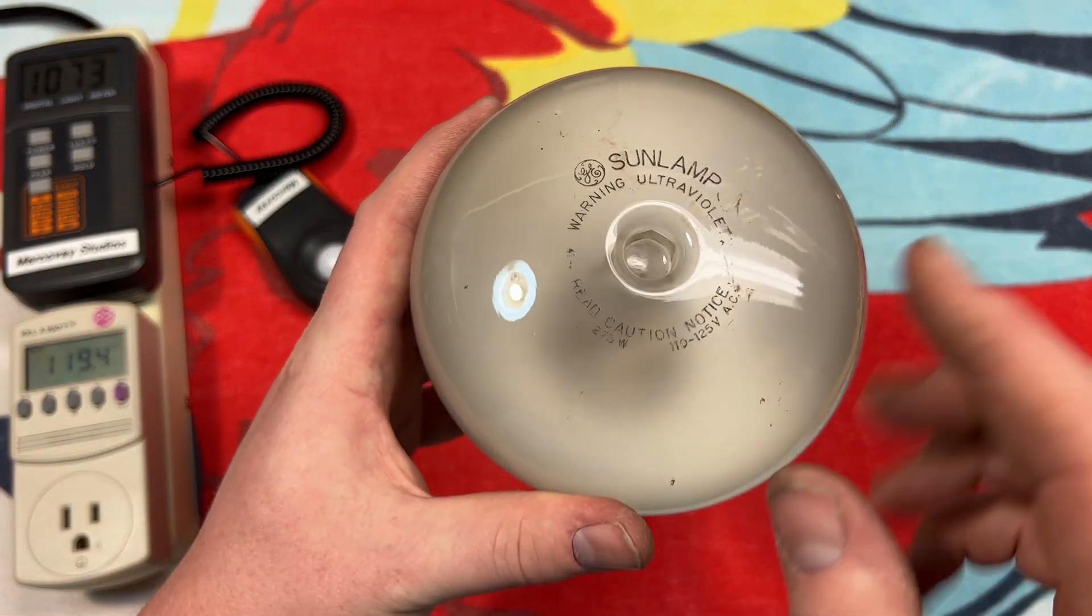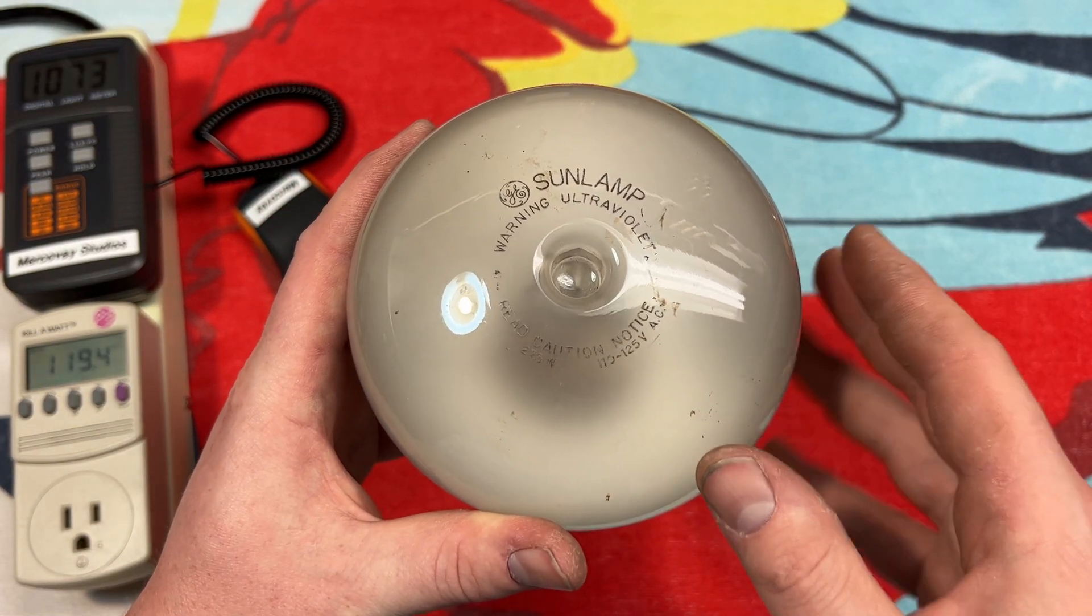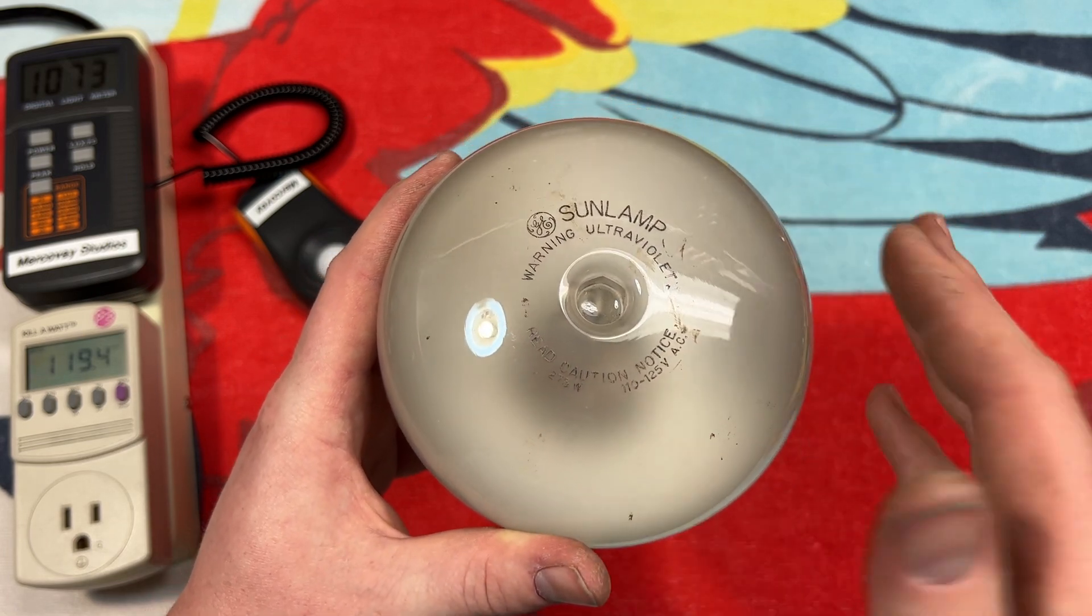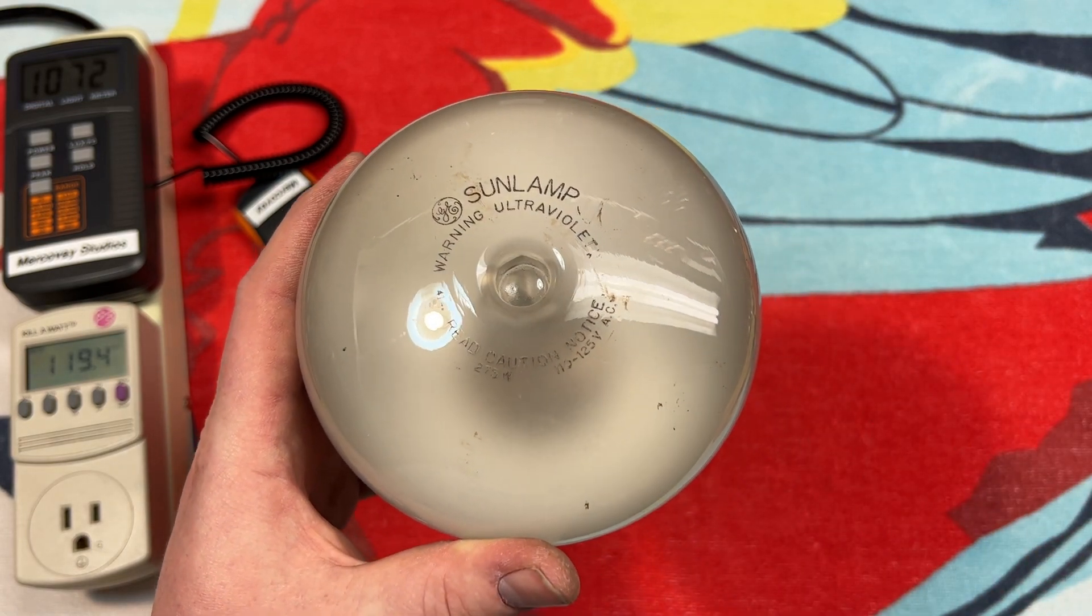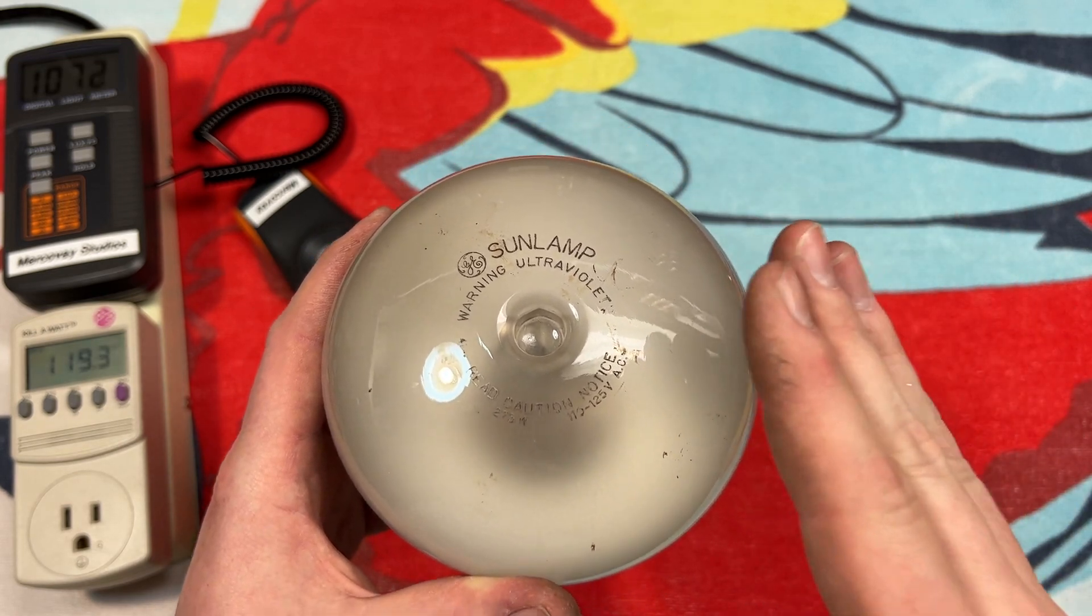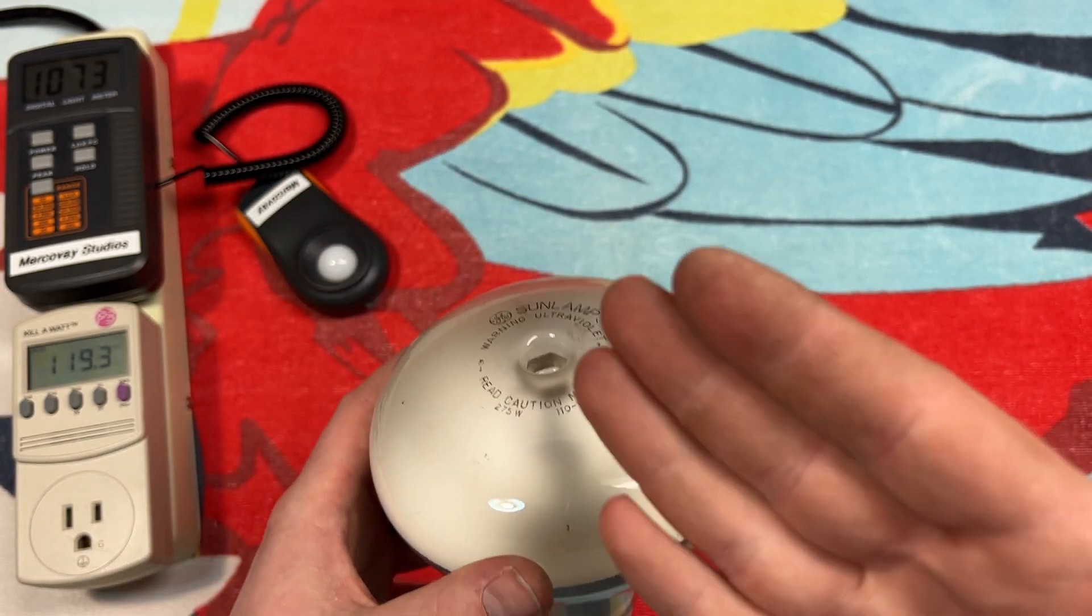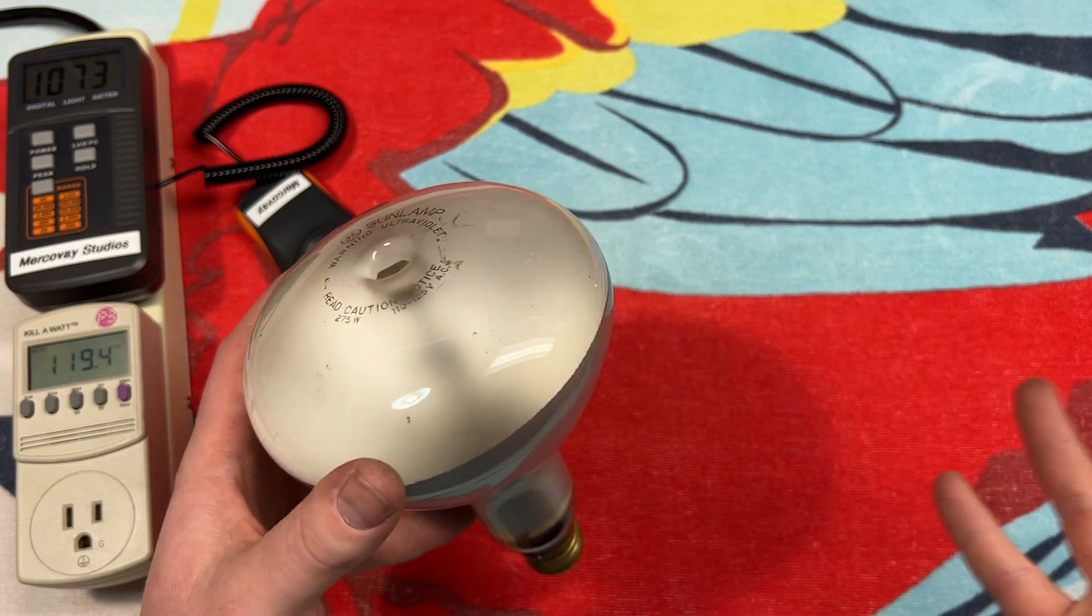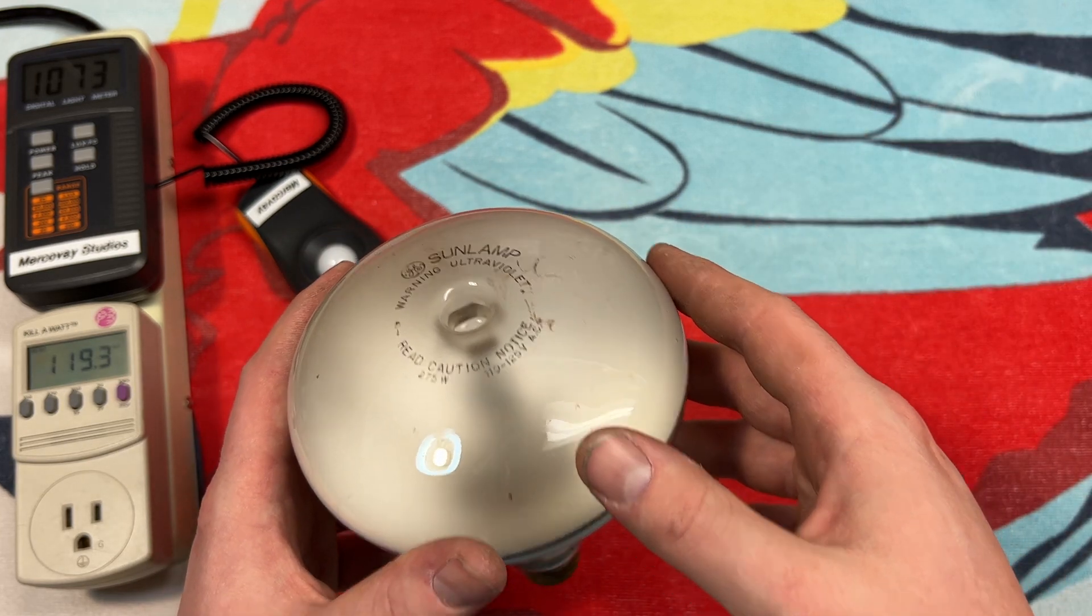So that's why it says read the caution notice here. It does produce ultraviolet and it is important to protect your eyes and skin from the light that is produced from this bulb. Of course, the camera will protect you from it today, because that's not going to get transmitted through your computer screen, obviously.